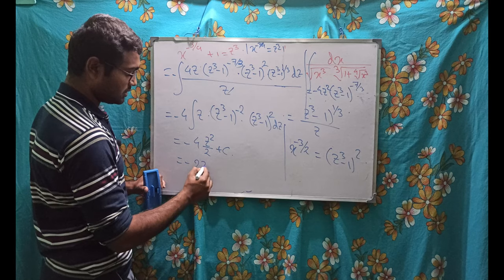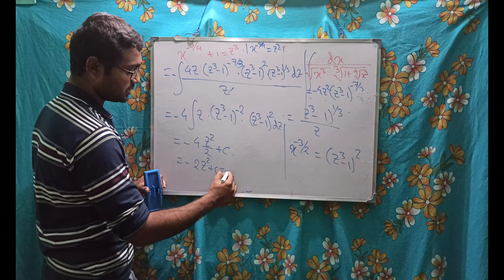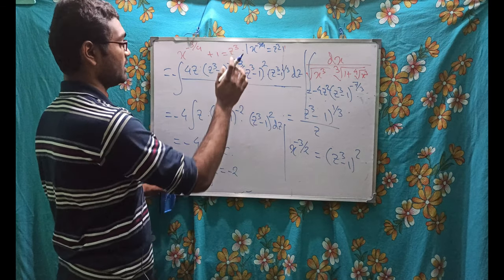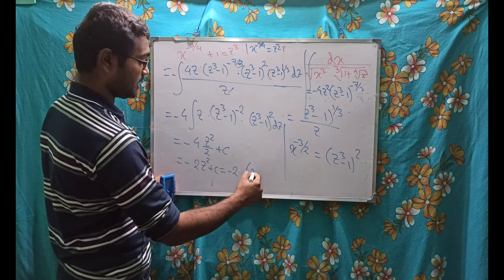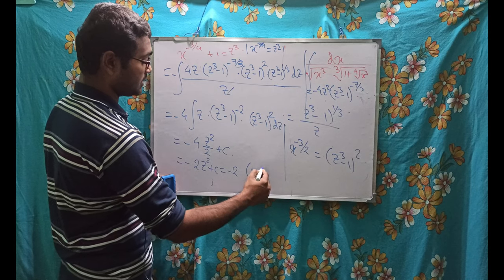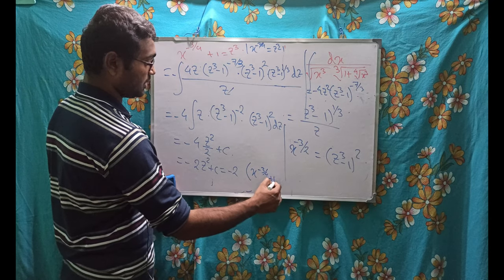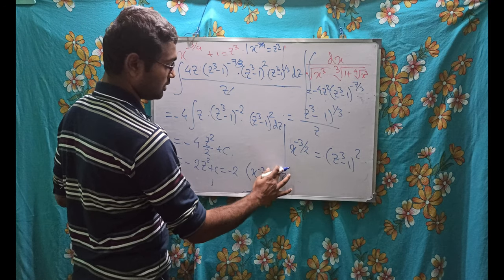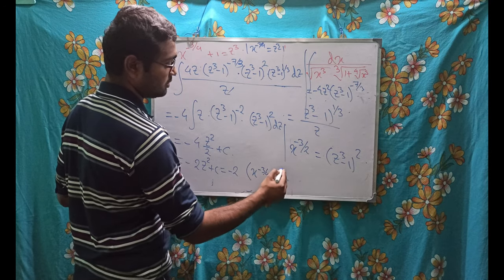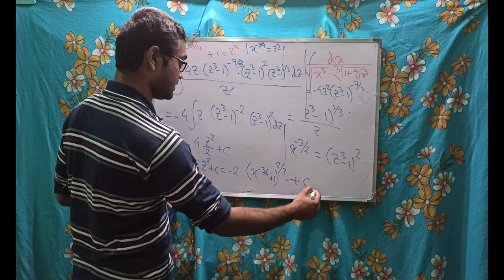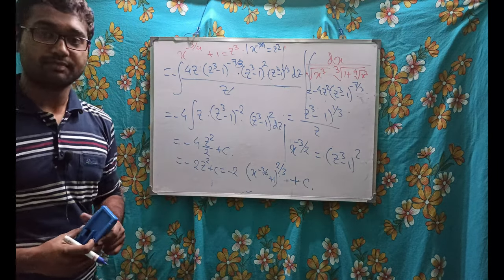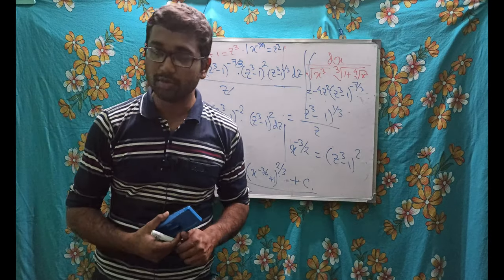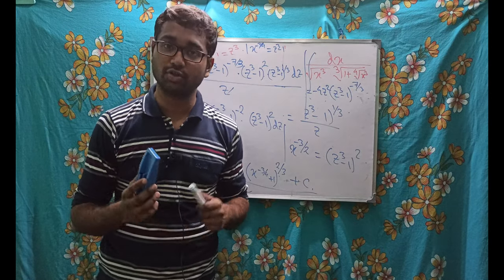The final answer is −2z^2 + C. Substituting back z = (x^(−3/4) + 1)^(1/3), we get −2·(x^(−3/4) + 1)^(2/3) + C. This is how we proceed with these problems using Chebyshev's conditions.